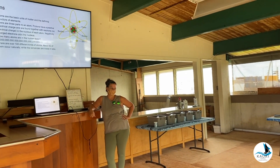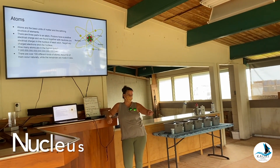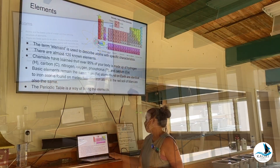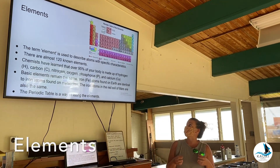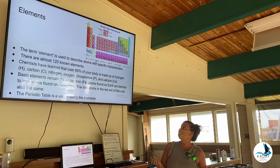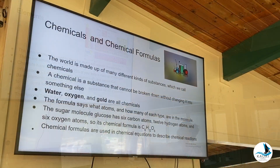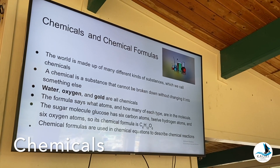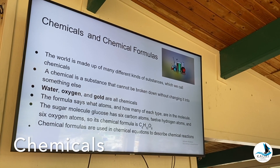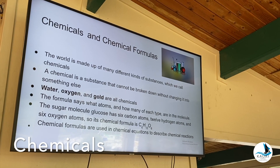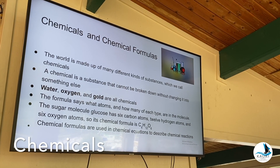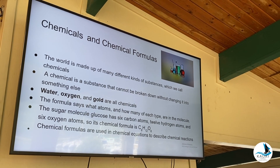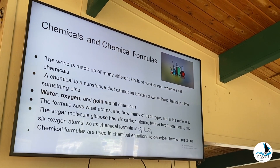And what's the middle part of the atom called, Sophia? The nucleus. Alright, so when you get atoms together they make elements. Combine elements and you start to get chemicals. A chemical is a substance that cannot be broken down without changing it into something else — and that's what you get when you have chemical reactions.